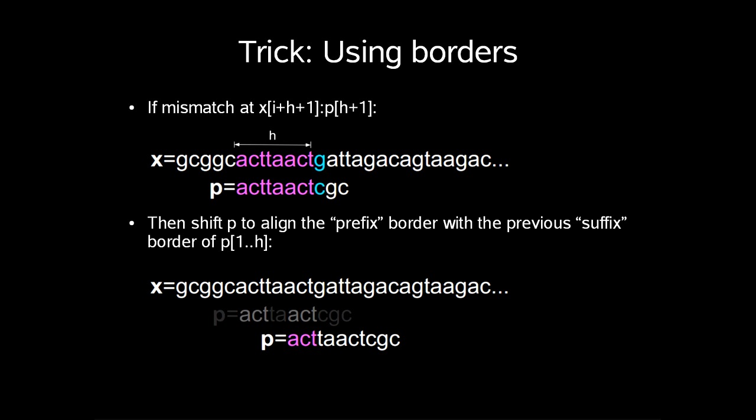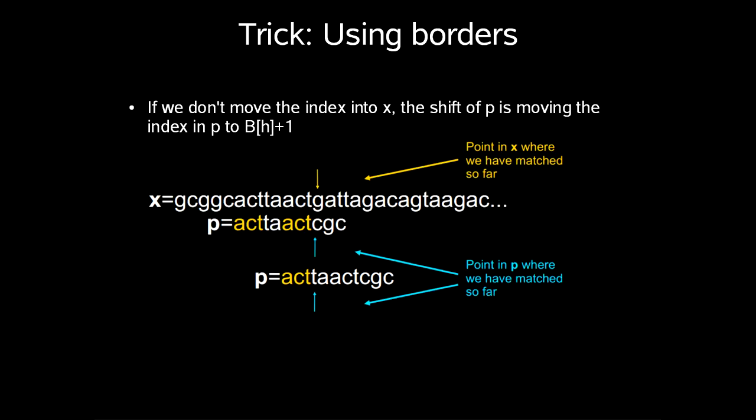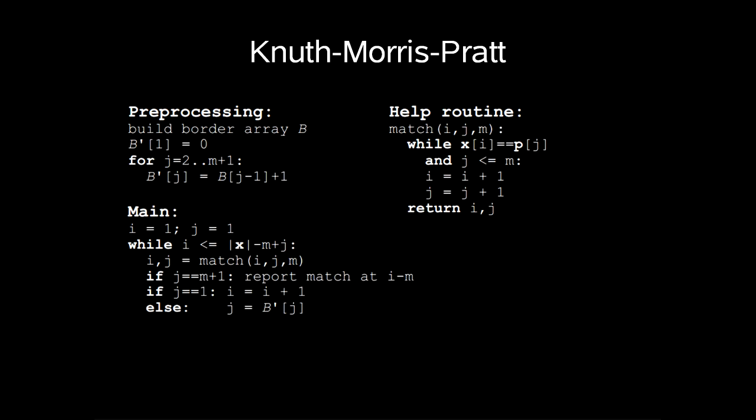So we use a trick that uses borders. If we get a mismatch at x i plus h plus 1, then shift p to align the prefix border with the previous suffix border of p1 up to h. If we don't move the index into x, the conceptual shift of p is just moving the index in p to index h in b plus 1. This is the idea of Knuth-Morris-Pratt.